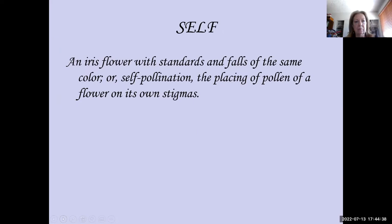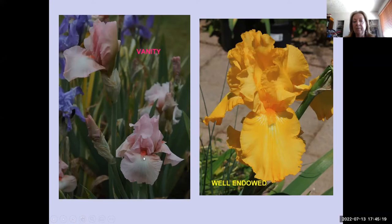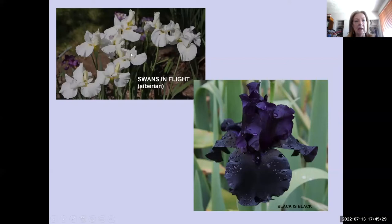The self pattern is an iris with standards and falls of the same color. It comes from self-pollination — placing pollen of a flower on its own stigmas. One thing not included in the judge's handbook that still needs to be resolved is whether, for an iris to be a self pattern, the beard has to be the same color as the standards and falls. Vanity is a pink self with a slightly darker pink beard; Well-Endowed is a gold self with a gold beard. There is currently no answer in the judge's handbook for that.